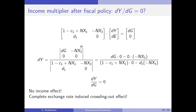The lines indicate we should compute a determinant, not absolute values. Computing: dg times 0 minus 0 times minus nx3 in the numerator, and in the denominator 1 minus c1 plus nx1 times 0 minus d1 times minus nx3. The income multiplier dy/dg is equal to 0. We have no income effect, but a complete exchange rate induced crowding out effect — there is no positive effect on GDP.